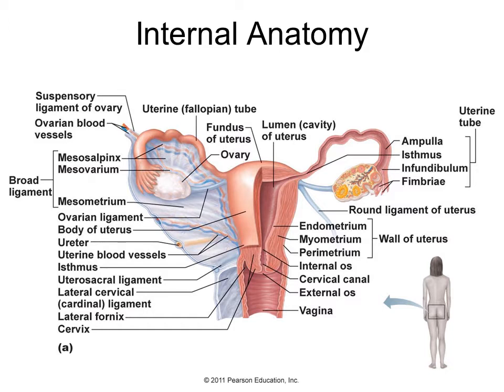The ovaries are where the eggs are stored and where ovulation occurs — the release of that egg. The uterine tube, also known as the fallopian tube or oviduct, connects to the uterus. The ovary is not directly attached to the uterine tube; it's right next to it. The end of the uterine tube has finger-like projections called the fimbriae, which move to create a current that draws the egg into the tube during ovulation.